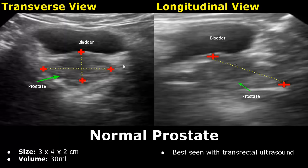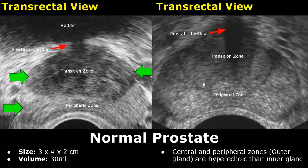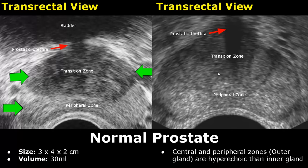The prostate is best seen with a transrectal approach. These images are transrectal images of the prostate. We can see some zonal anatomy — here is the peripheral zone and this is the transition zone. The peripheral zone is hyperechoic. This hyperechoic channel leading towards the bladder is the prostatic urethra.